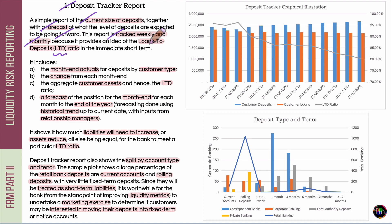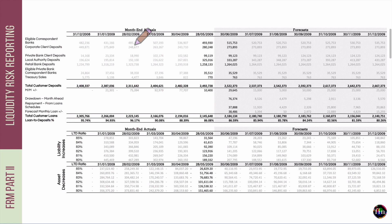From a liquidity risk standpoint, lower values of this LTD ratio are favorable. From a profitability standpoint, lower values of this LTD ratio actually hurt the bank. If the LTD ratio is on the lower side, it means that a smaller proportion of incoming deposits is being converted to loans, and therefore the net interest income of the bank would suffer. Now let's take a look at a quick sample of this deposit tracker report.